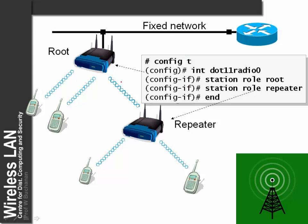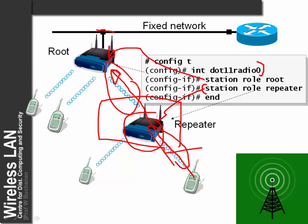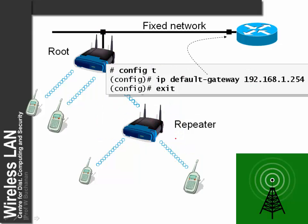We basically have two main roles for our devices: a repeater and a root. A repeater simply relays to a root. Within the D0 interface we can define whether a device is a repeater or a root. A root connects to a fixed network. Repeaters tend to waste bandwidth — the bandwidth is wasted twice by transmitting one data frame.